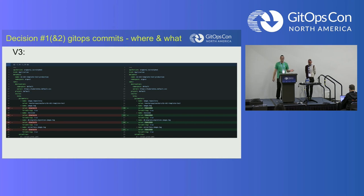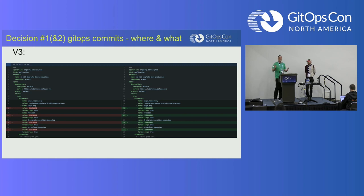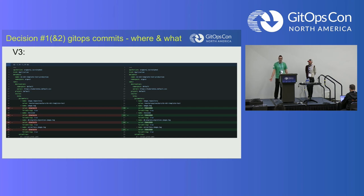The Argo CD docs noted not to use Helm parameter overrides in production, so we were a little hesitant. We reached out on the Argo Slack and someone said it seemed okay. It's been working fine. Application owners are very happy, and so far we're liking it.